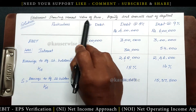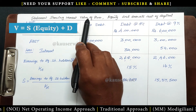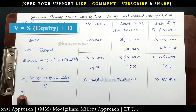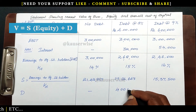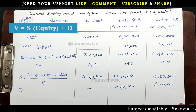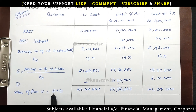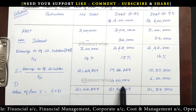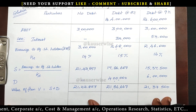Now we can find out the market value of the firm, V. The formula is: V equals equity (S) plus debt (D). We have calculated S, and now we add D, which is the debt given in the problem. For the first option, no debt — put a dash. For the second option, 4 lakhs debt. For the third option, 6 lakhs debt. Adding these gives the total value of the firm V for each of the three alternatives.